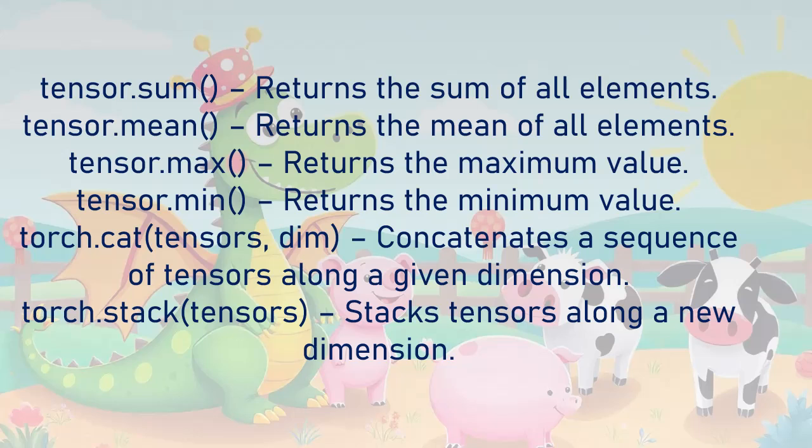torch.cat concatenates a sequence of tensors along a given dimension. torch.stack stacks tensors along a new dimension.